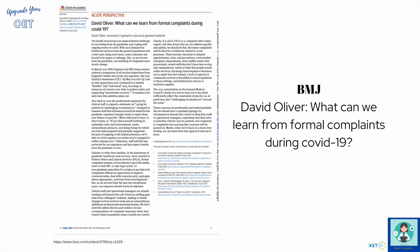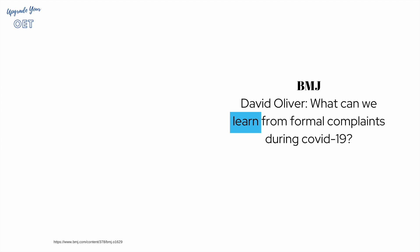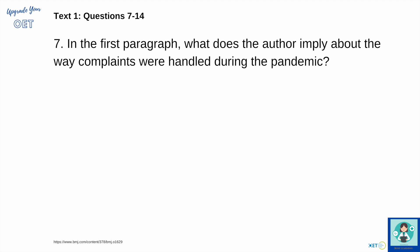This text is from the BMJ — I'll put the URL below and it's also in the comments box so you can read it yourself. It's a little shorter than typical OET texts which tend to be around 800 words. The text is by an author called David Oliver and the question is: what can we learn from formal complaints during COVID-19? So it's all about complaints and what we can do about them.